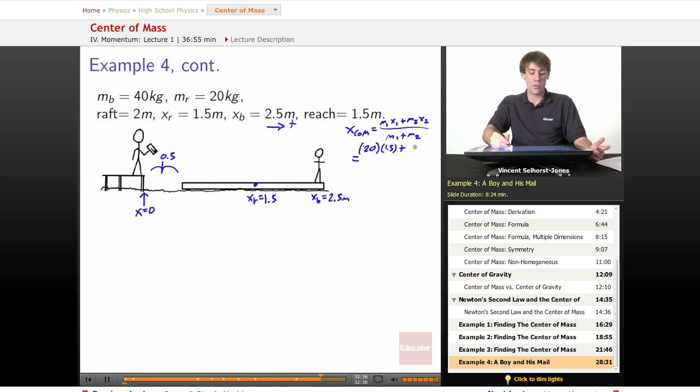Plus M2, X2, mass of the boy, is 40, times the location of the boy is 2.5. We divide that by the two things put together, 20 plus 40, and that will wind up giving us, on the whole, 130 over 60. So the center of mass of the boat-boy system at the beginning is 2.17 meters. So if we think about where that is, that winds up being somewhere over here.